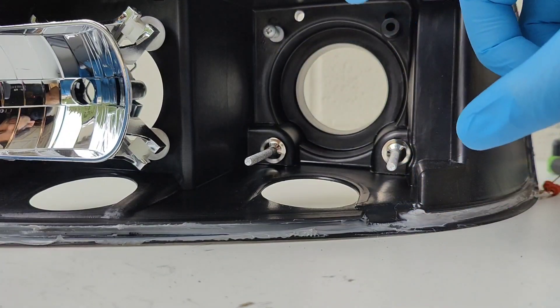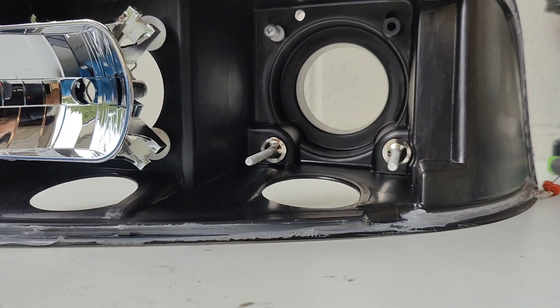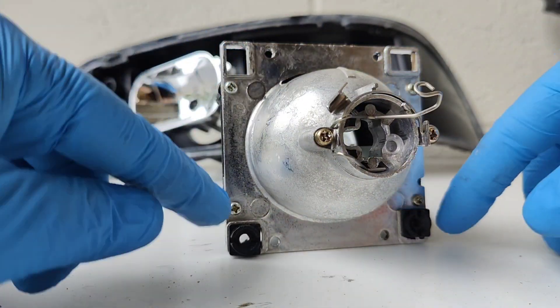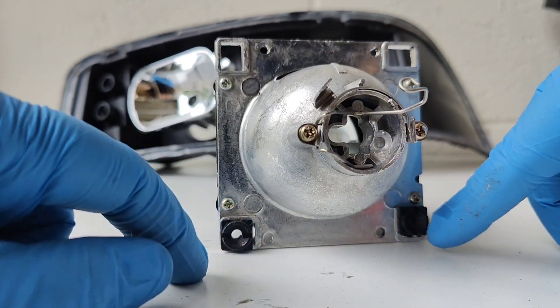Looking back at the projector itself, you have the two adjusters there and then the ball joint pivot point right there.